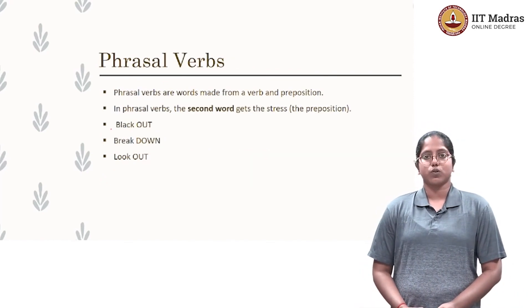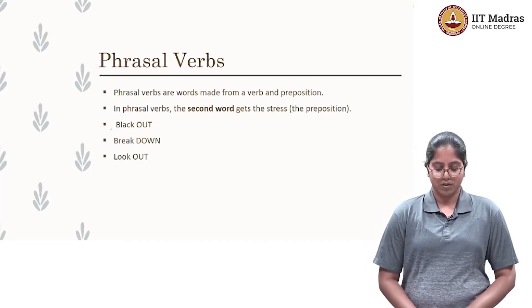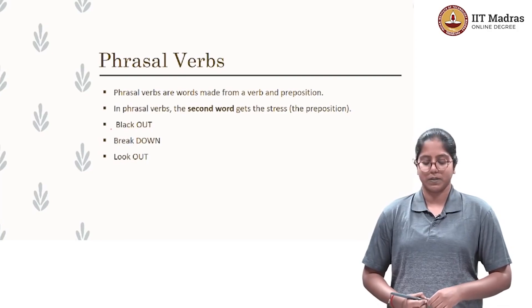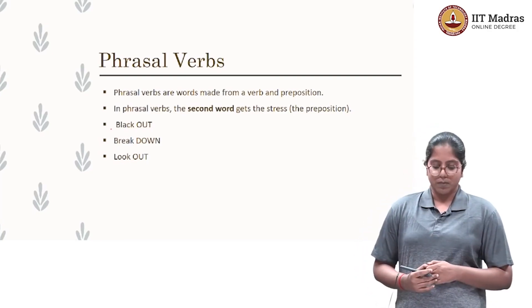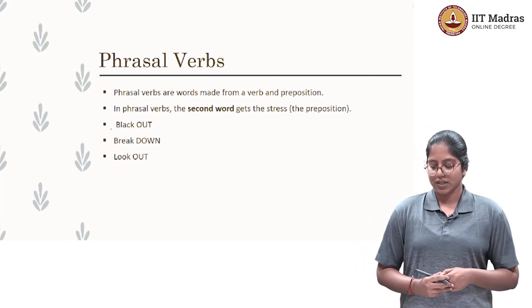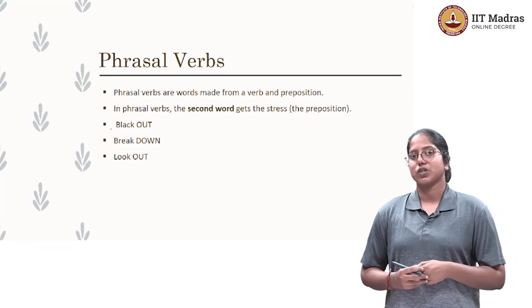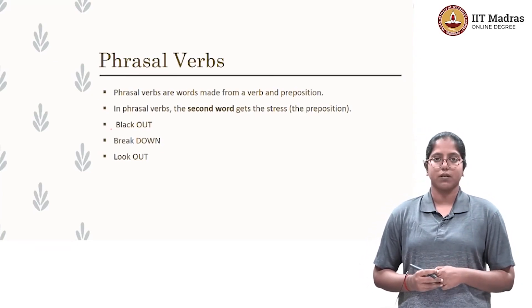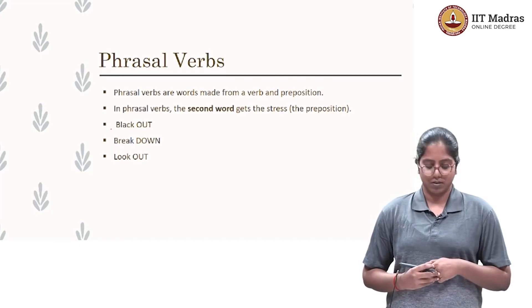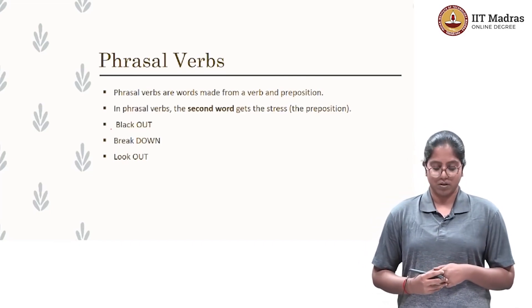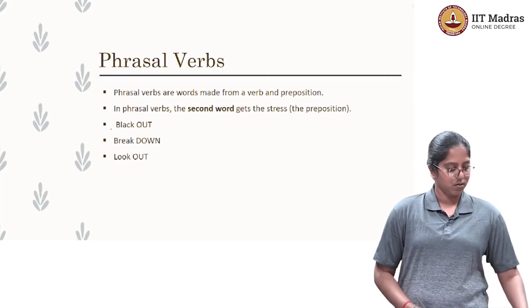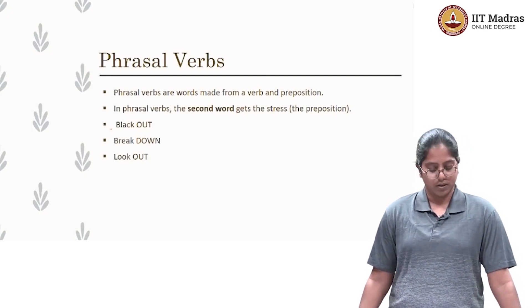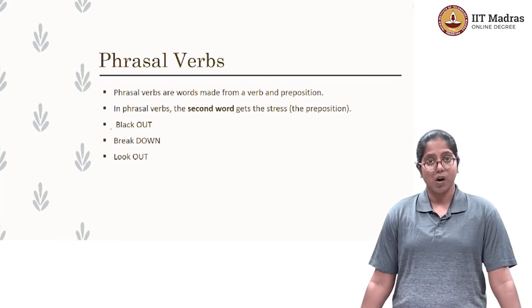Next, we are going to look at phrasal verbs — words made out of a verb and a preposition. In phrasal verbs, the second word, that is the preposition, gets the stress. For example: black out, break down, look out.